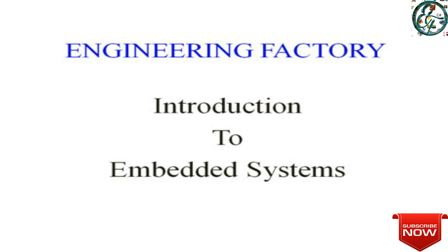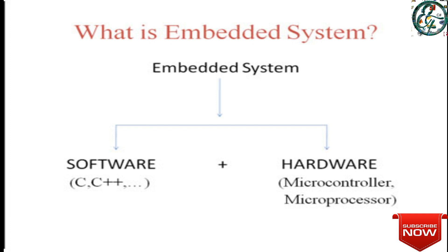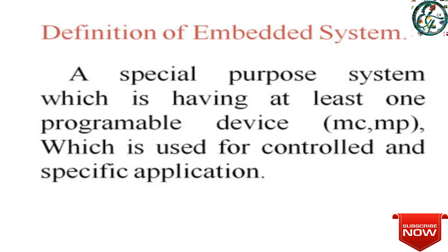What is an Embedded System? An Embedded System is a combination of software and hardware. It is a Special Purpose System which has at least one programmable device. In a device, there is at least one programmable device — that is called an Embedded System.